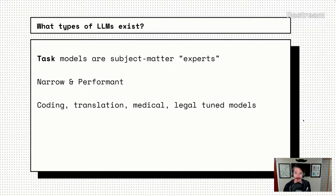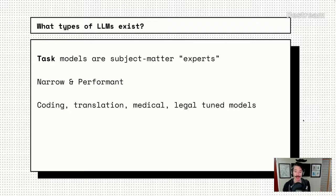We also have task models, which are subject matter experts. These are further tuned versions of instruct models — subject-dependent, more narrow, a bit more performant because of that, and better in the areas they're further trained on. We've seen things like GitHub Copilot for programming feedback and suggestions, translation models focused on translating to many different languages, and medical and legal knowledge models that give feedback on a large corpus of specialized knowledge. These specifically tuned task models provide analysis and targeted feedback.